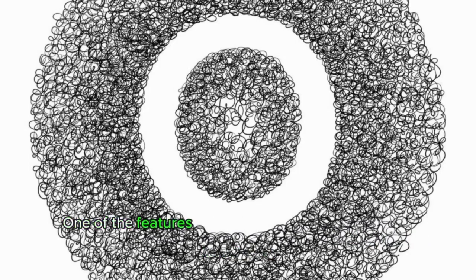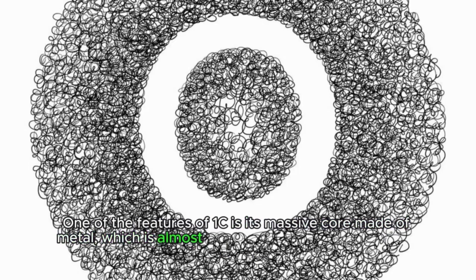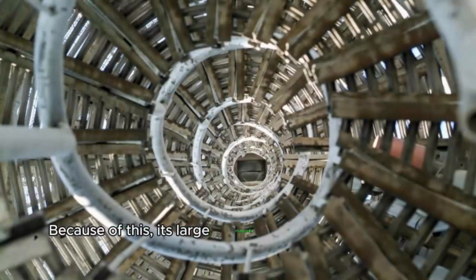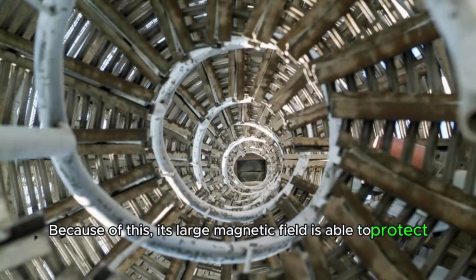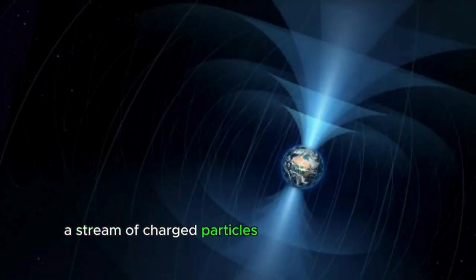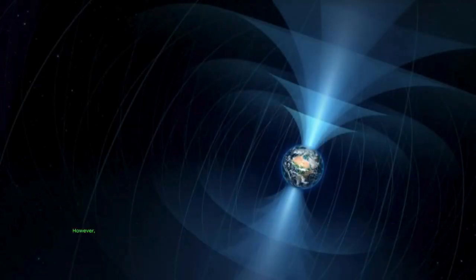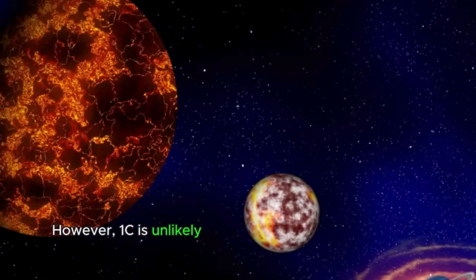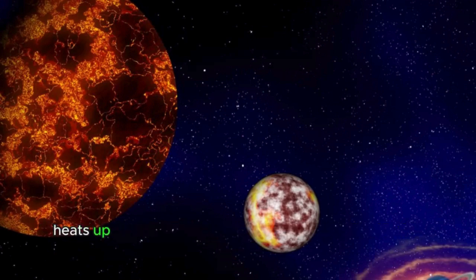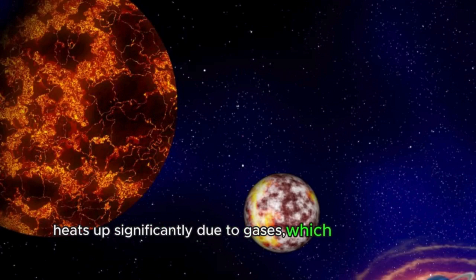One of the features of 1c is its massive core made of metal, which is almost one and a half times larger than Earth's. Because of this, its large magnetic field is able to protect the planet from stellar wind, a stream of charged particles that could destroy the atmosphere. However, 1c is unlikely to contain water, and like 1b, the surface heats up significantly due to gases, which makes life on these planets impossible.